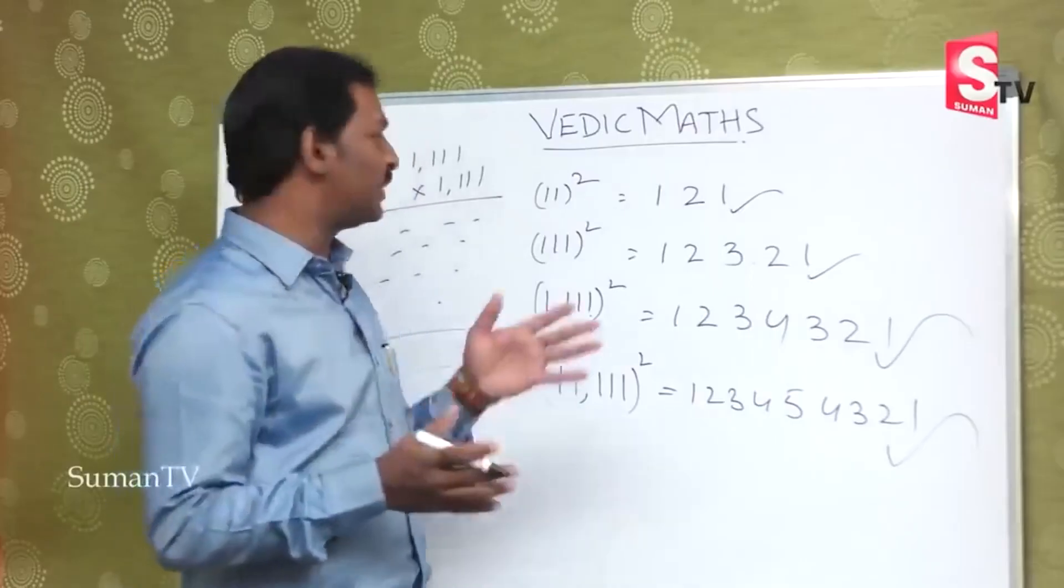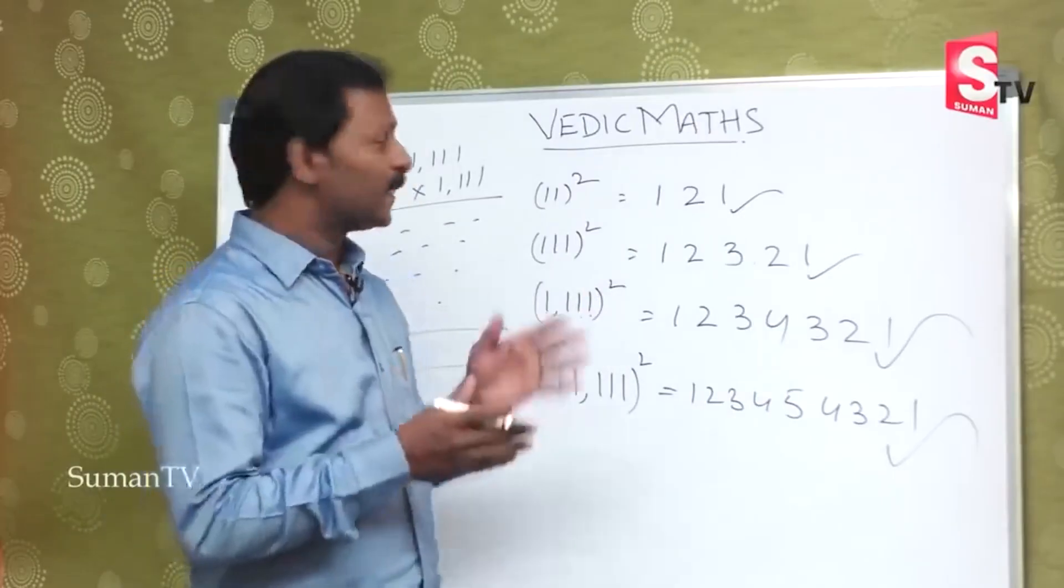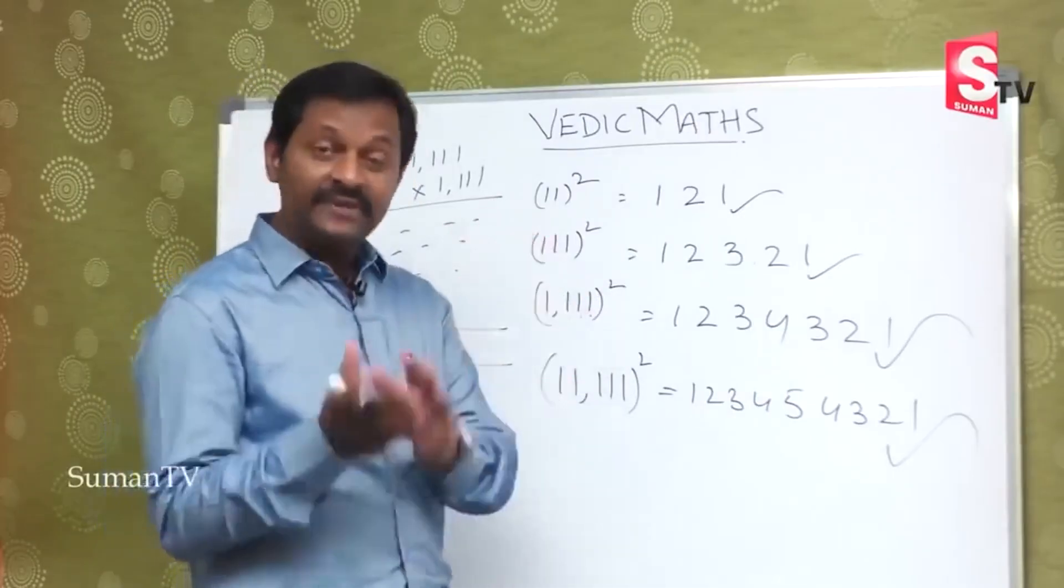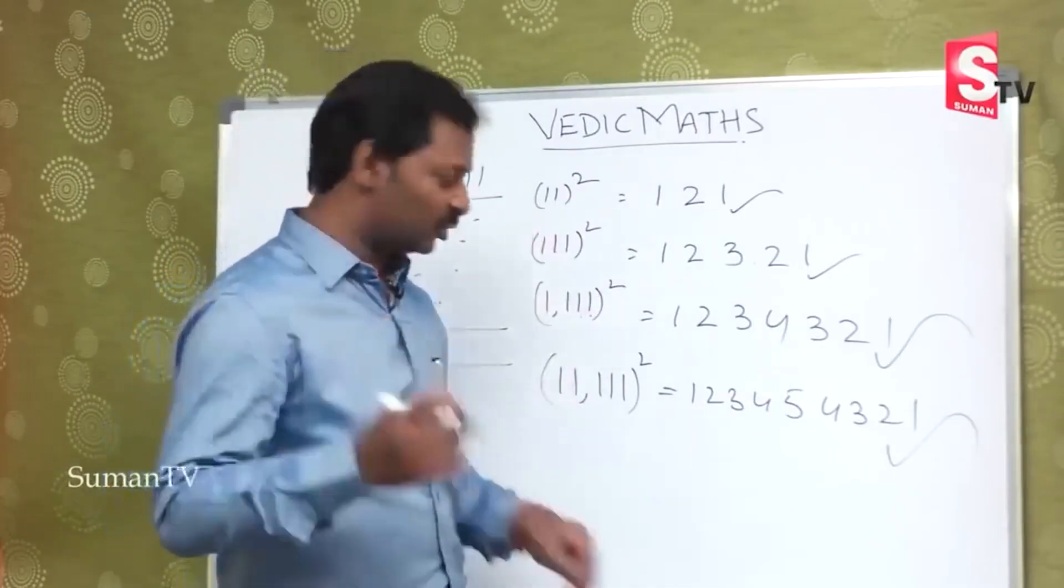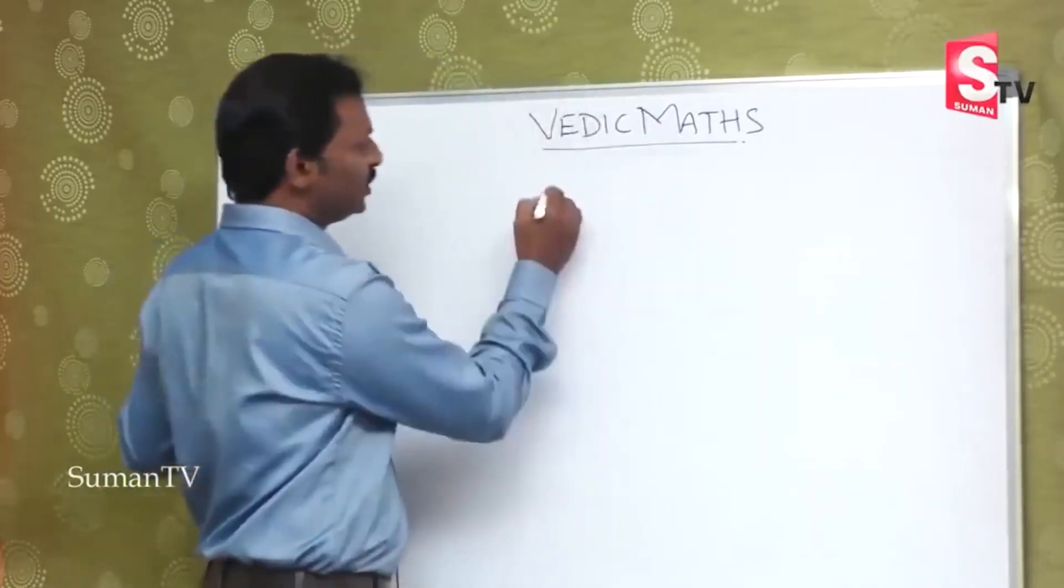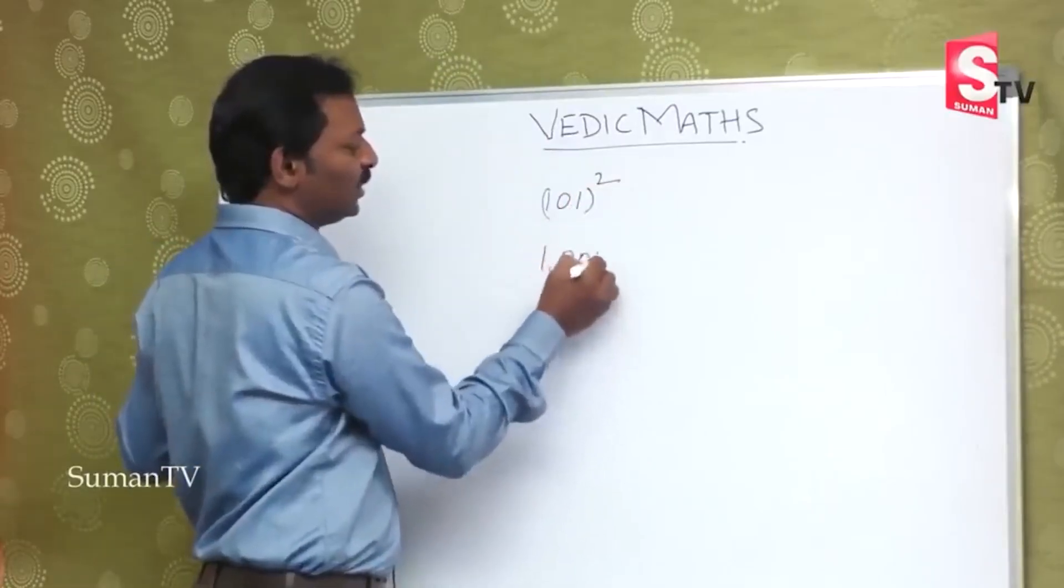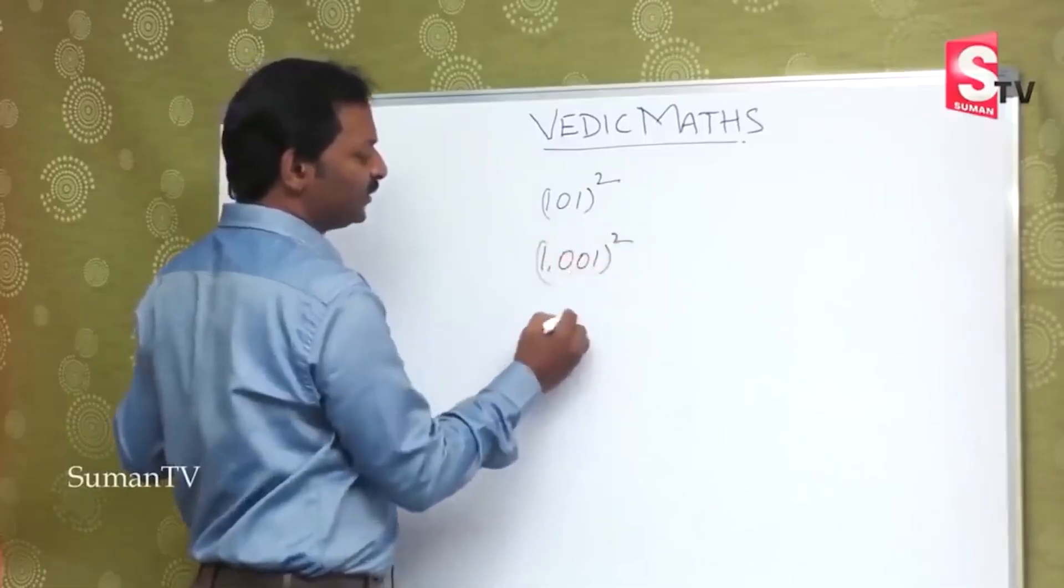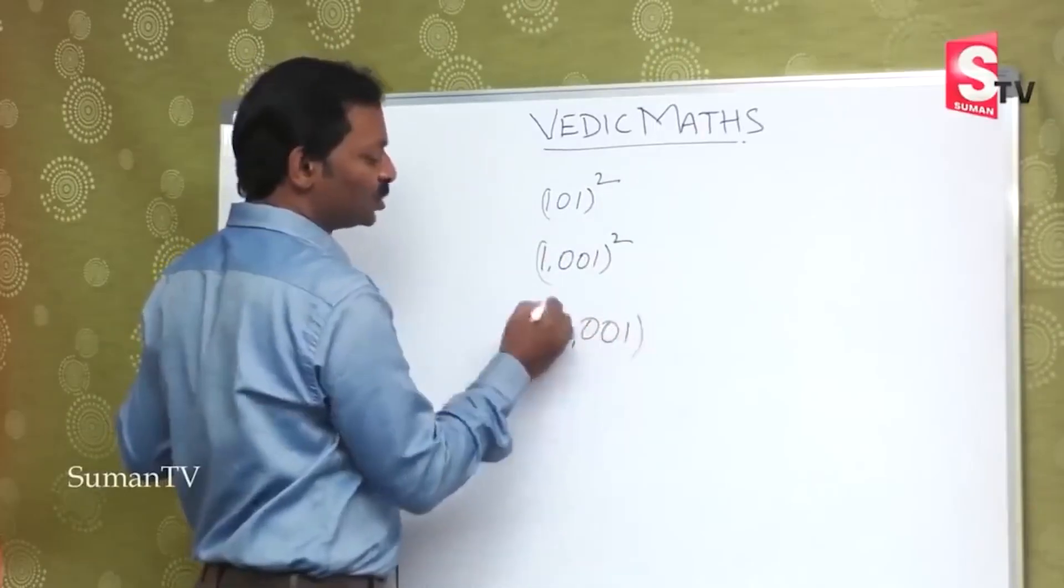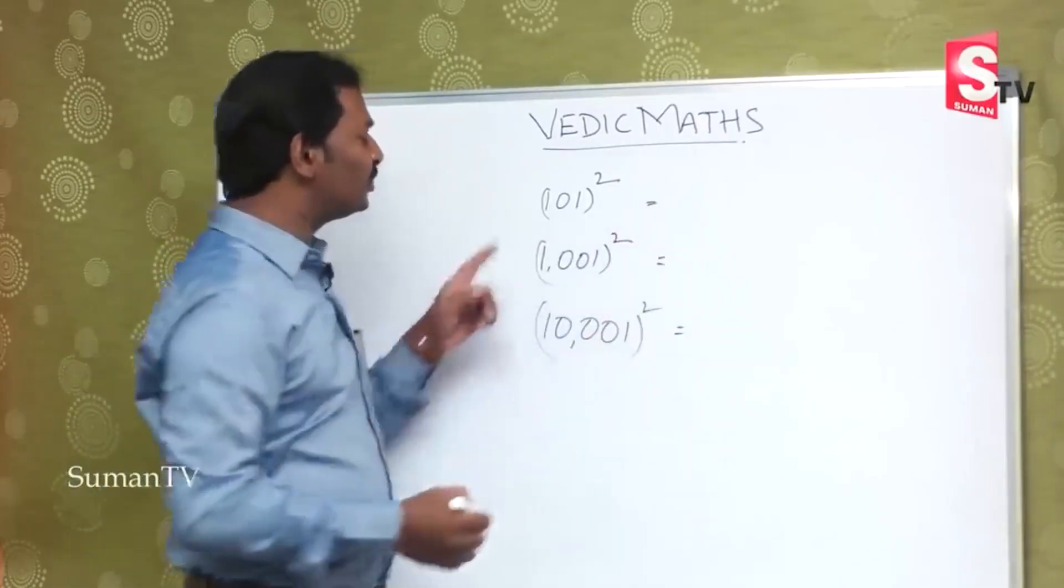So you will learn the answer. Once square is given. Suppose this one is given. If it is included by 0, it will be given. Suppose if you take 101 whole square, 1001 whole square, or 10001 whole square, it will be given.